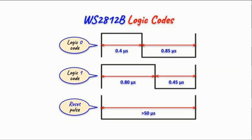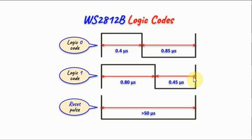The control circuit on the WS2812B will recognize the ones and zeros sent by the microcontroller by the way it is coded. A logic zero code has a high pulse of 0.4 microseconds and then a low pulse of 0.85 microseconds. For a logic one code, the high pulse is 0.8 microseconds and the low pulse is 0.45 microseconds. To reset the WS2812B, we need to send a low pulse of at least 50 microseconds.